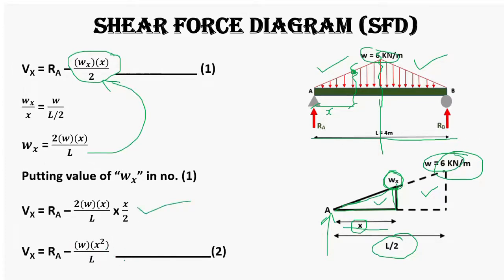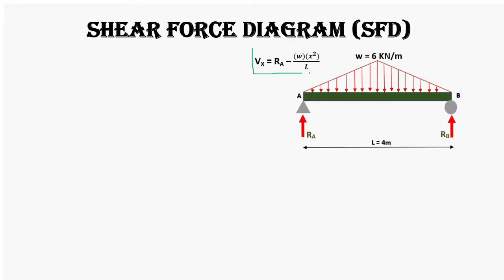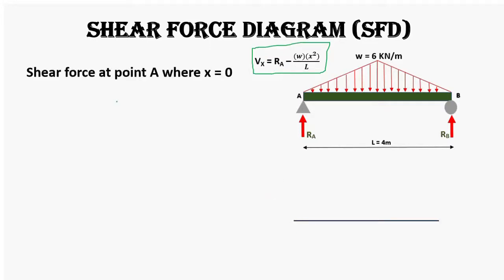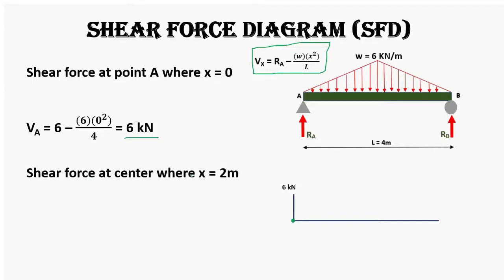Now let's draw the shear force diagram using this equation. At point A, distance x = 0, substituting gives a shear force of 6 kilonewtons, so we draw a 6 kilonewton line in the upward direction. At the center of the beam, x = 2 meters, substituting gives a shear force of 0. We then draw a parabolic curve from A up to the center.